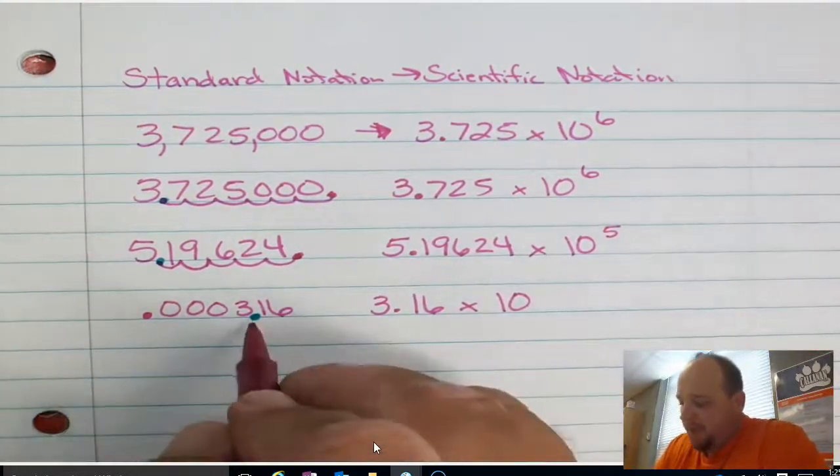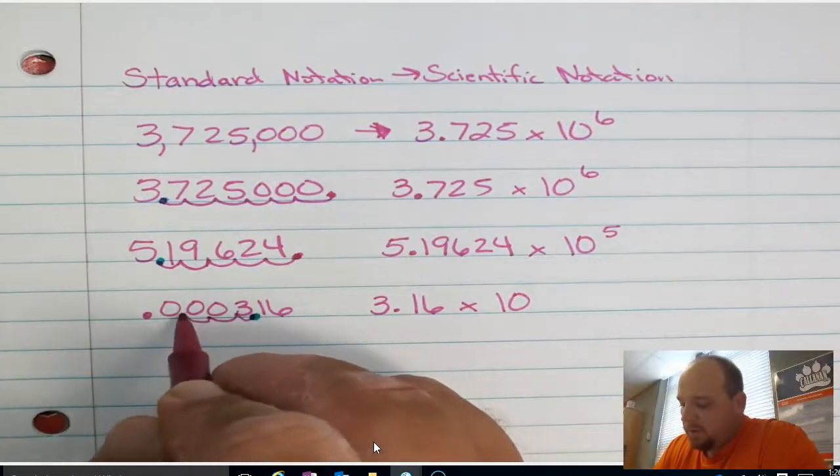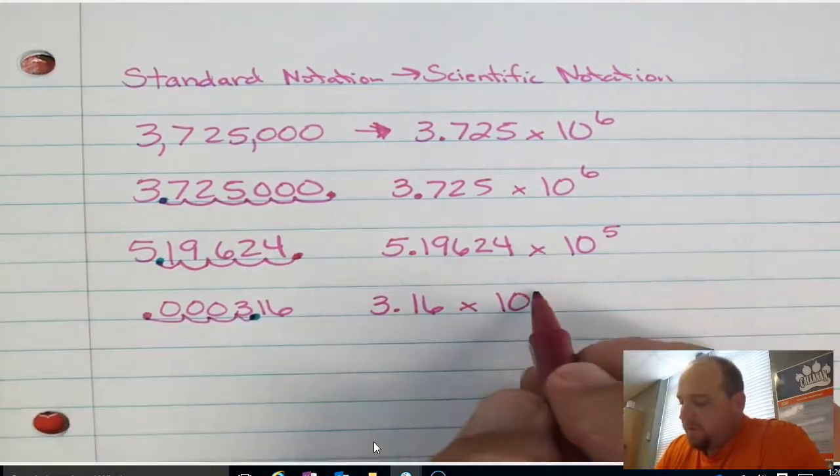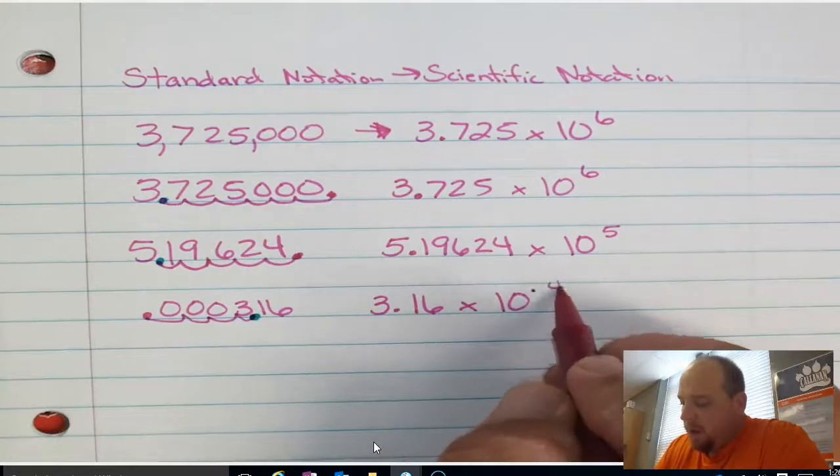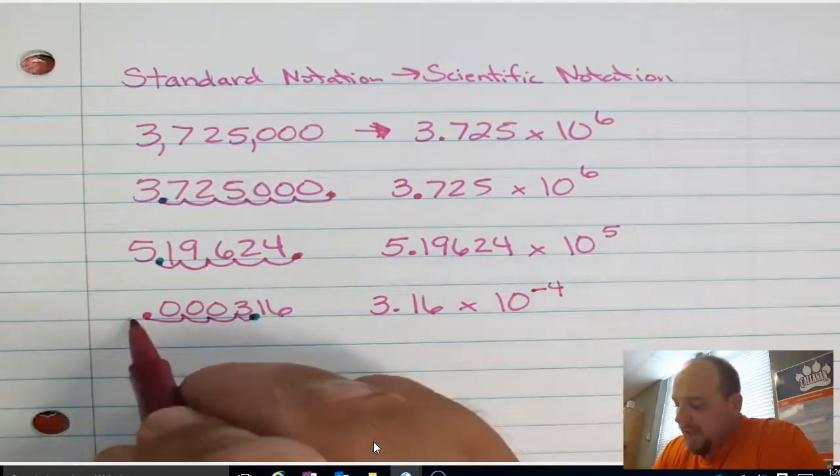And just like before, we're going to count how far it went from the blue one to the red one. 1, 2, 3, 4. It moved four spots. So I'm going to have a 4. But in this case, it's going to be a negative because I moved to the left.